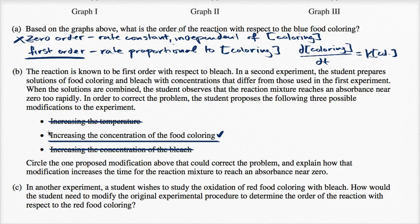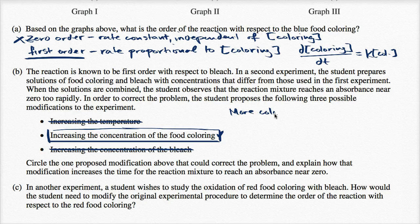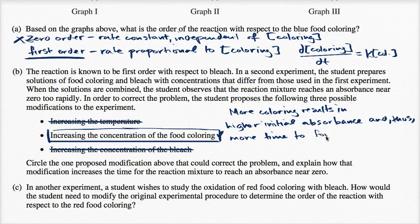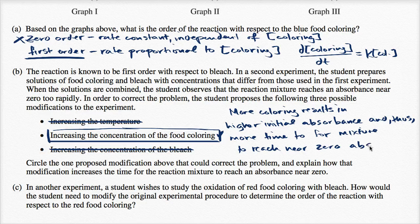The student should circle the modification of increasing the concentration of food coloring. More coloring results in a higher initial absorbance, and thus more time for the mixture to reach an absorbance near zero.